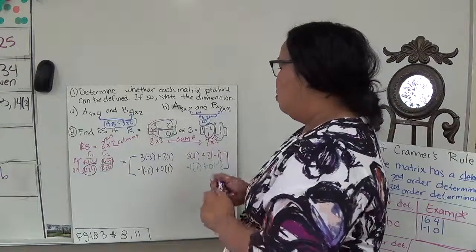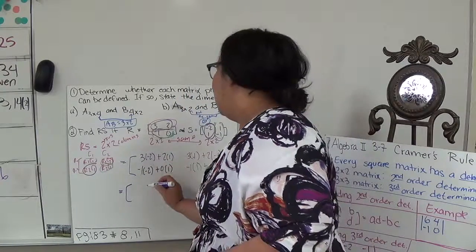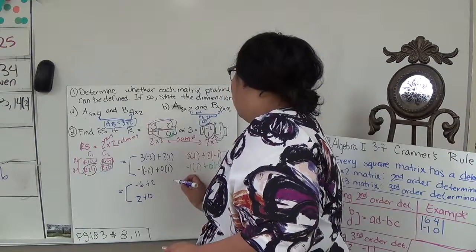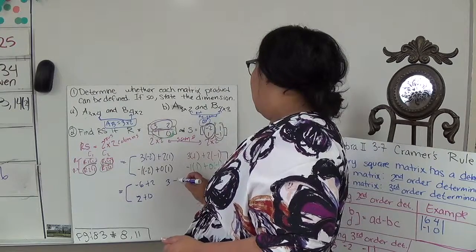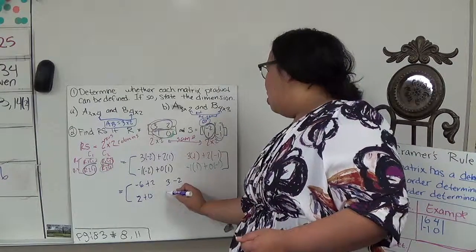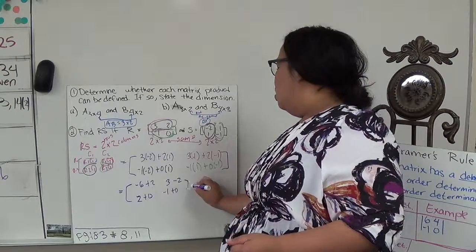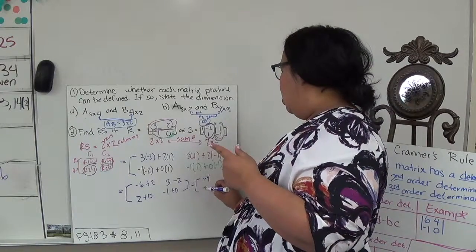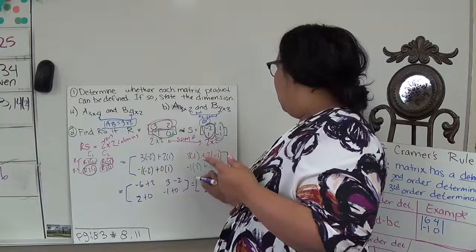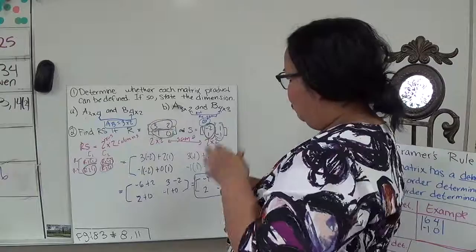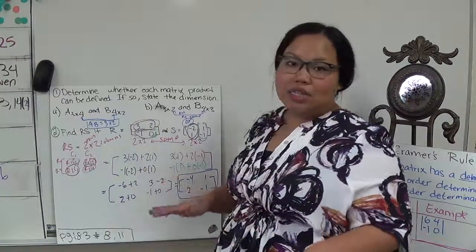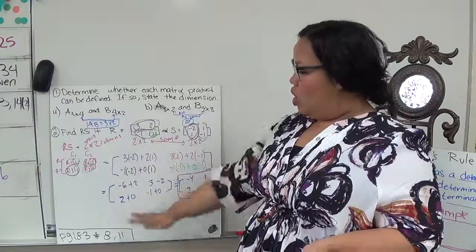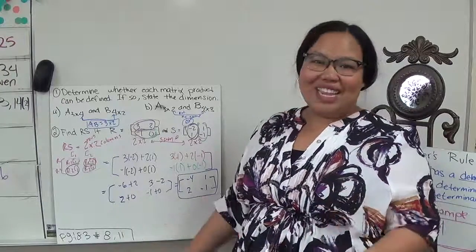So from there I can just do the math. 3 times negative 2 is negative 6 plus 2 gives negative 4. 3 times 1 minus 2 gives 1. Negative 1 times negative 2 is positive 2 plus 0 gives 2. And negative 1 plus 0 gives negative 1. So my answer is the matrix: negative 4, 1, 2, negative 1. Hopefully that made sense. Once you're used to matrices it's not too difficult a concept. Try page 183, numbers 8 and 11, and I'll see you in class.